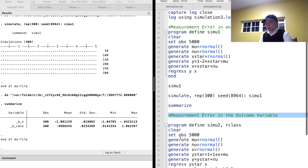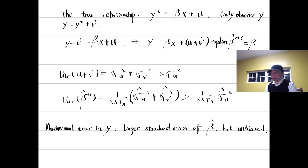Next, let's examine the OLS estimate when the outcome variable or dependent variable has a measurement error. It can be proved that the OLS estimate is unbiased, but the standard error of the estimate will become larger. Y* is the actual value. The true relationship between y* and x is that y* equals beta times x plus the error term mu. We only observe and collect y, which equals y* plus the measurement error nu. We can rewrite y as a function of x and a composite error term. The probability limit is beta — it is unbiased because x is not correlated with the composite error term. But the variance of beta-hat is larger than the case without measurement error.